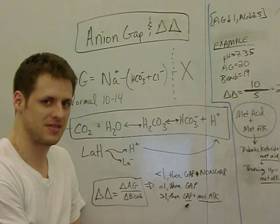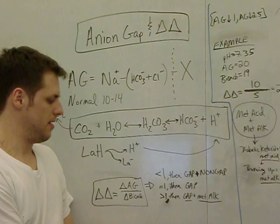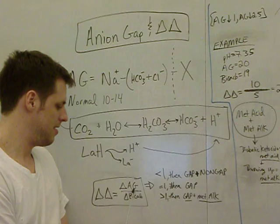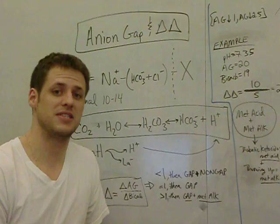And finally, if it's greater than 1, you have a gap acidosis and a metabolic alkalosis. Now maybe you couldn't have guessed that, because this takes a little bit of kind of playing with it to get it. If it's greater than 1, that means you have a change in your anion gap that is much greater than your change in bicarb.